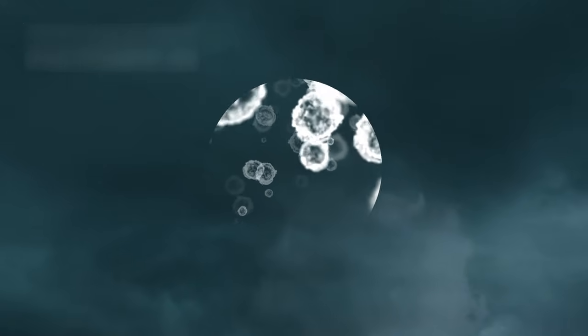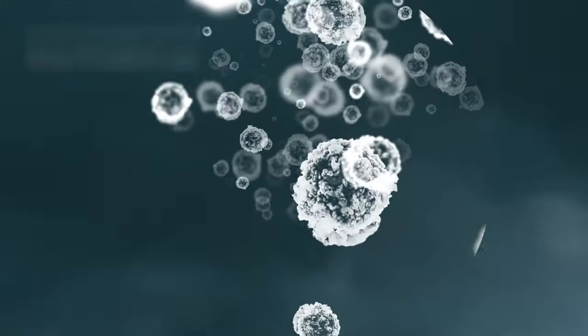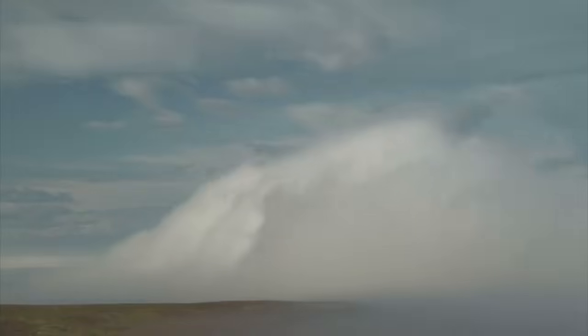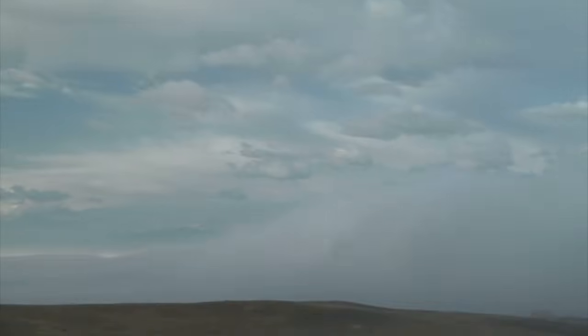Another major factor influencing its brightness is dust formation. Betelgeuse regularly ejects gas into space, and as this gas cools, it forms dust clouds. These clouds can temporarily block some of the star's light, making it appear dimmer from Earth. When the dust disperses, the star brightens again.